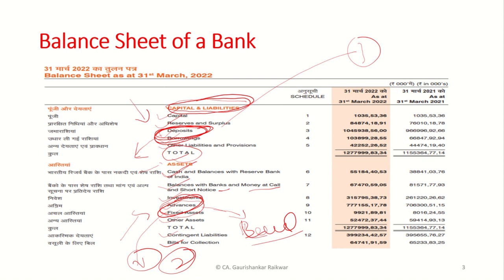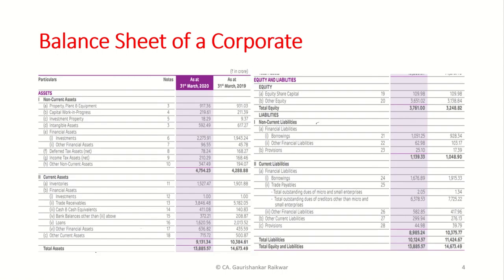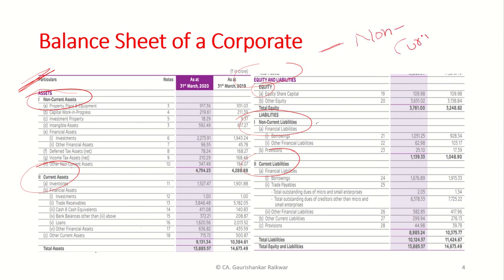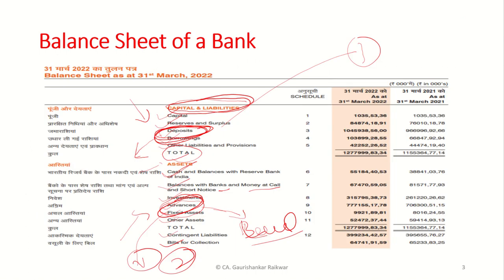Now let's have a look at the balance sheet of a corporate. Though it is in vertical format, I have taken it to horizontal format just to fit in the presentation. On the asset side, we have non-current assets and current assets, and on the liability side, we have equity, non-current liability, and current liability. The basic difference is the classification into current and non-current. In the corporate balance sheet, there is a bifurcation between current and non-current assets and liabilities, whereas in the case of a bank, there is no such classification.